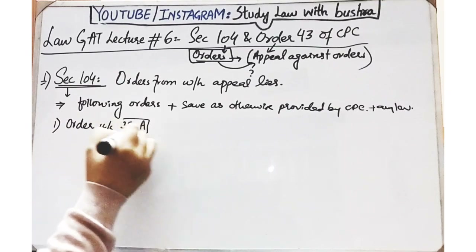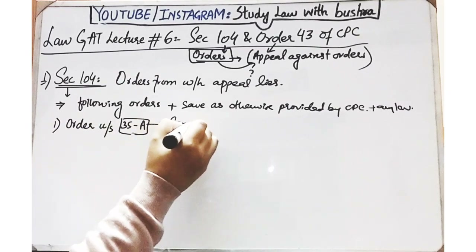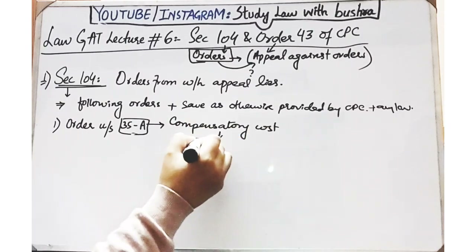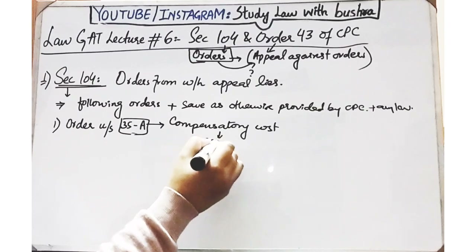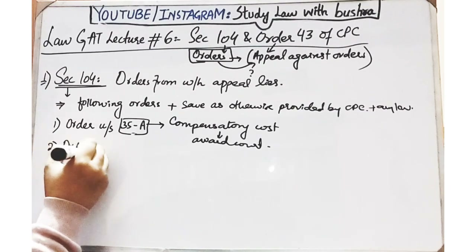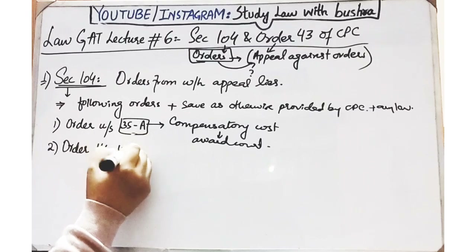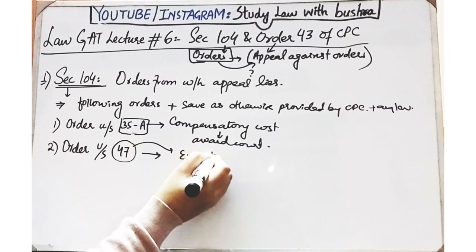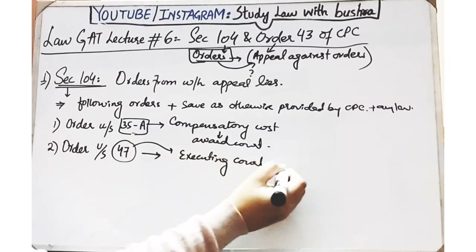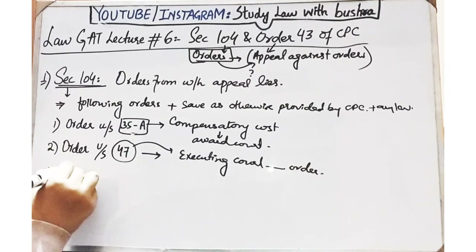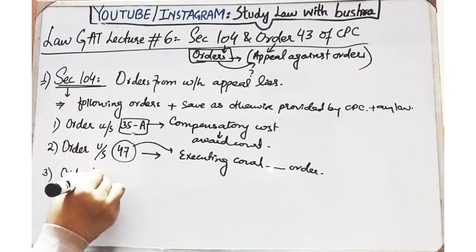Section 104 mein clause 1 kehti hai ke 'an appeal shall lie from the following orders' - is section ke andar jo list batai gai hai un par aap appeal file kar sakti ho. Sabse pehla aata hai order under Section 35A, jo compensatory cost se deal kar raha hai. Agar court ne koi aisa order pass kiya jisme compensatory cost award ki gai hai to us ke against appeal file kar sakti ho. Doosra hai Section 47, jo execution se related hai - executing court ke kisi bhi order ke against appeal file ki ja sakti hai.